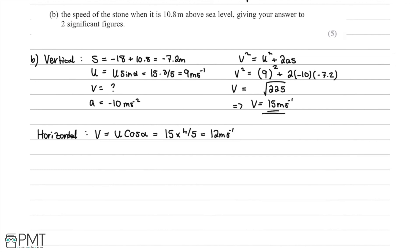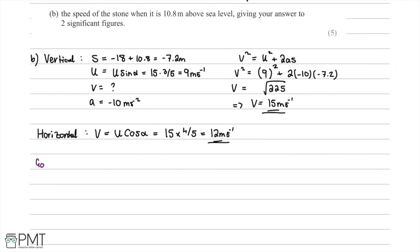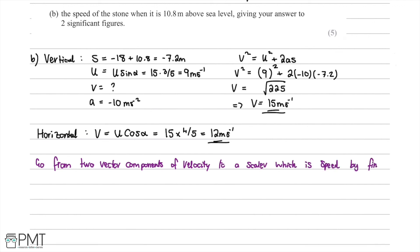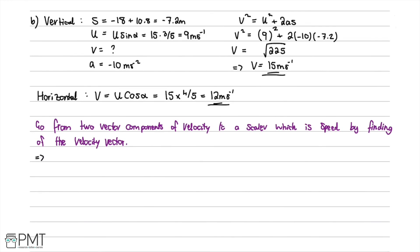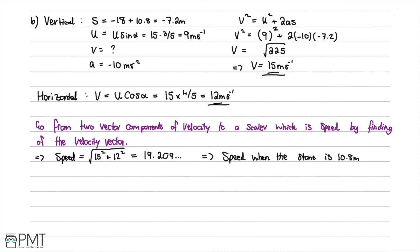From these two vector components, we find the magnitude of the velocity vector to get the speed. Speed equals the square root of 15 squared plus 12 squared equals the square root of 225 plus 144 equals the square root of 369, which comes out as approximately 19.209. Rounded to two significant figures, the speed when the stone is 10.8 meters above sea level is 19 meters per second.